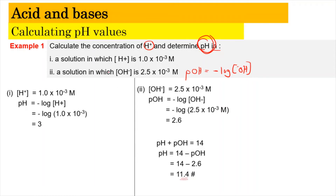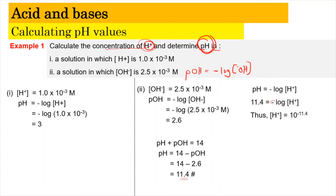We can also calculate [H⁺] from the pH. Since pH = −log[H⁺] and pH = 11.4, rearranging gives [H⁺] = 10⁻¹¹·⁴. Putting that into the calculator gives [H⁺] = 3.98 × 10⁻¹² mol/L.